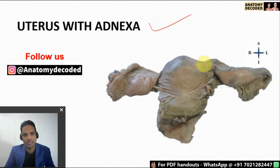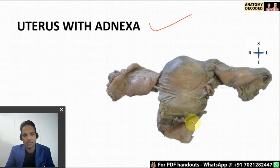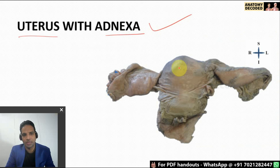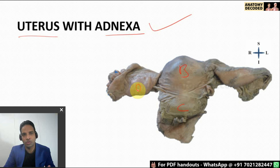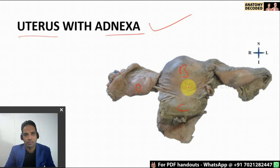Now let's cover the uterus along with associated structures — the adnexa — which include the fallopian tube, ovary, and vagina. In the uterus, the upper part is the body and the lower part is the cervix. To hold the uterus in anatomical position, hold it in both hands such that the ovaries are lying on the posterior aspect. At times the uterus may be seen along with the urinary bladder, in which case the urinary bladder should be on the anterior aspect.